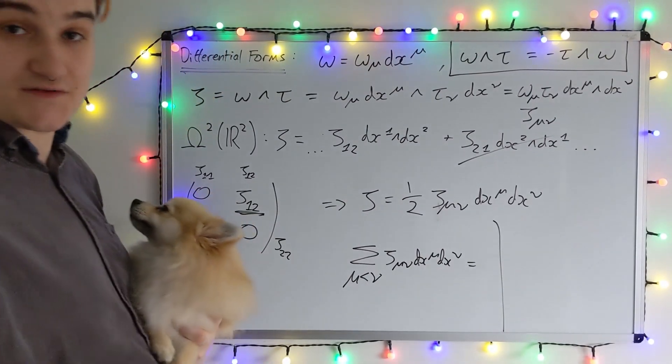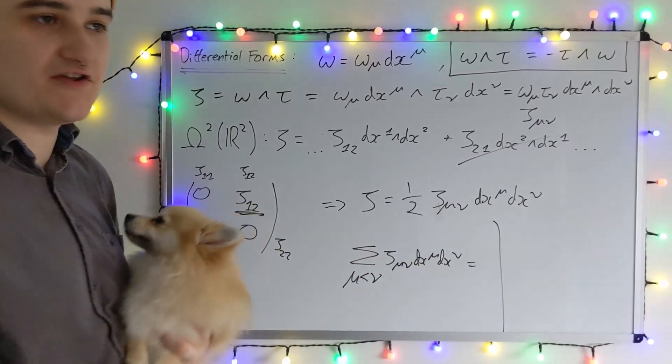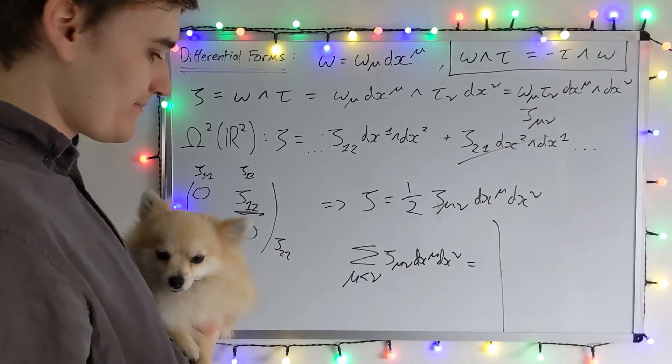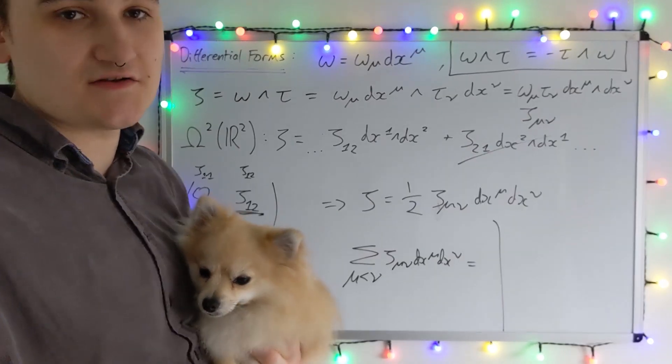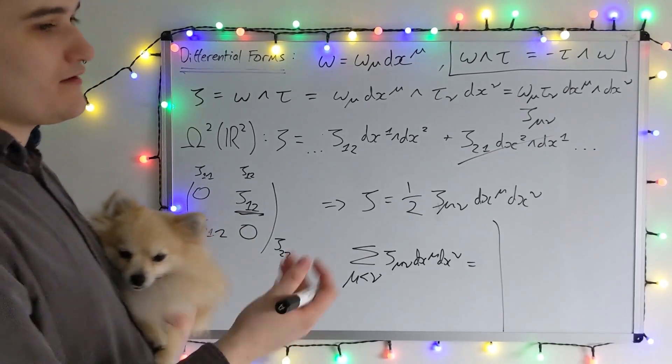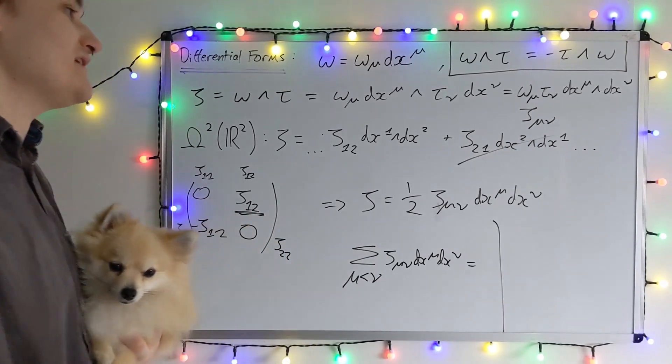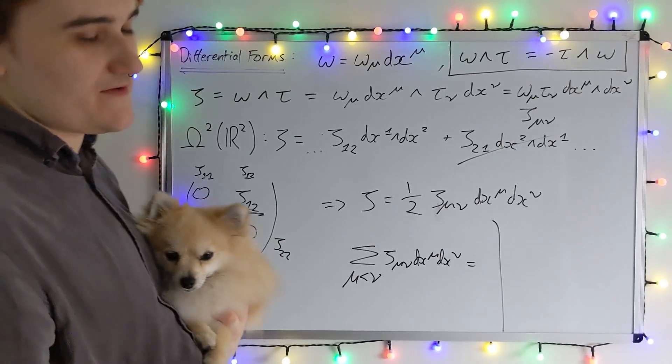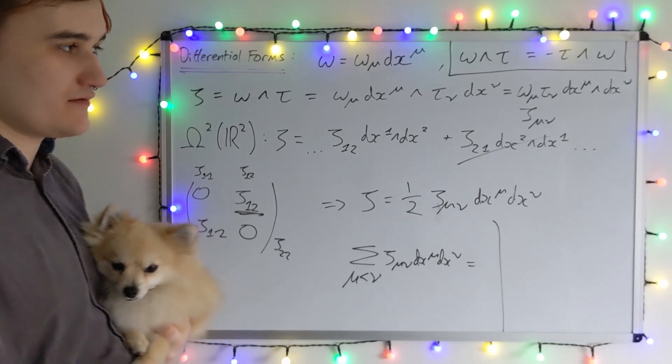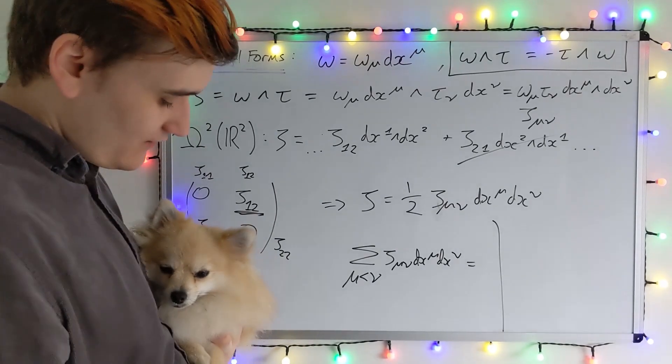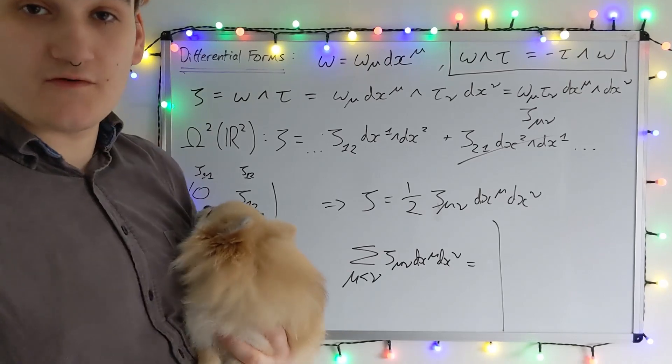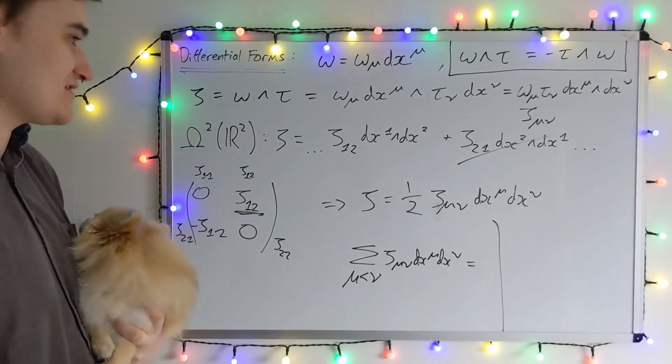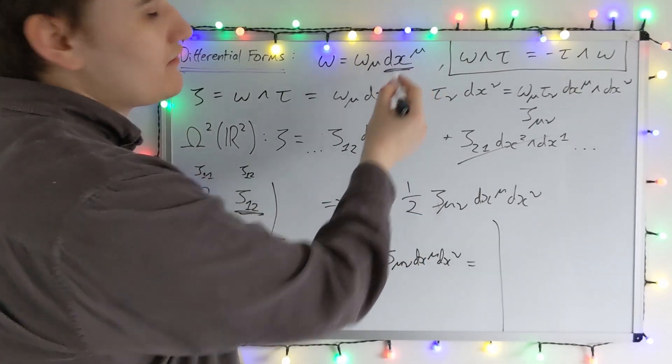I introduced differential forms as just a new abstract quantity. We realized that zero forms are just a re-identification of functions. Then I introduced a new piece of machinery known as the exterior derivative, which we found maps a Q form into a Q plus one form. And we then used that to identify what the one form basis vectors are. They're essentially just the exterior derivative of our coordinate functions.